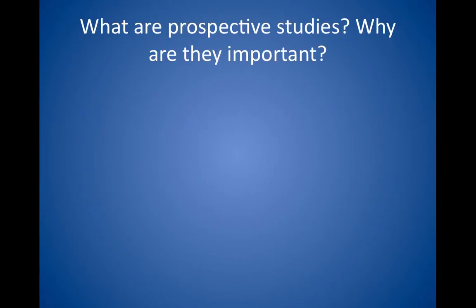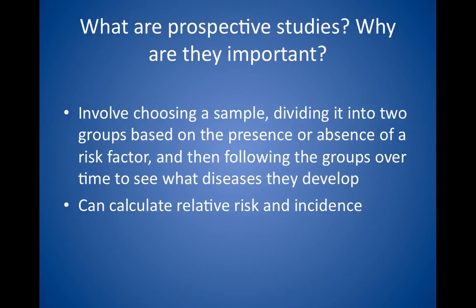What are prospective studies and why are they important? Prospective studies, also known as observational, longitudinal, cohort, incidence, or follow-up studies, involve choosing a sample, dividing it into two groups based on the presence or absence of a risk factor, and then following the groups over time to see what diseases they develop. For example, you can follow people with and without asymptomatic hypercholesterolemia to see if people with hypercholesterolemia have a higher incidence of myocardial infarction later in life. You can calculate relative risk and incidence from this type of study. Prospective studies are time-consuming and expensive, but are practical for common diseases.